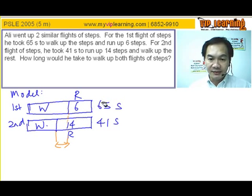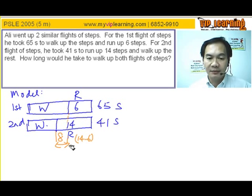See, for the first flight of steps, it takes 65 seconds because there's more walking involved. 14 minus 6 gives me 8. So we can say that 8 steps of walking accounts for the difference in time.